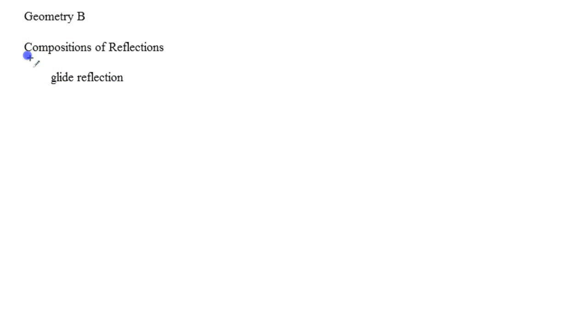Alright, so today we'll be talking about compositions of reflections. Now compositions of reflections are basically if you have an image right here, let's say triangle ABC right here, and then you do a reflection.